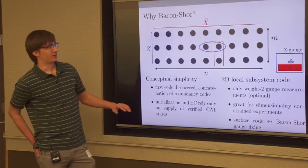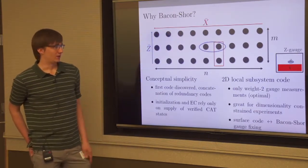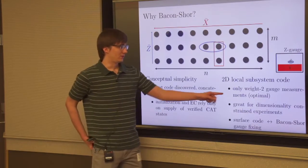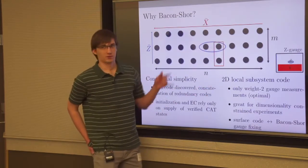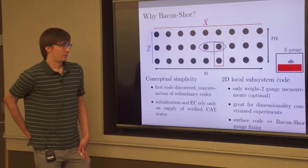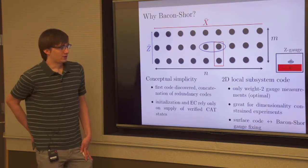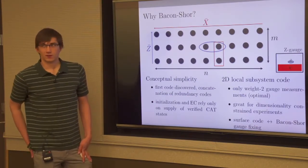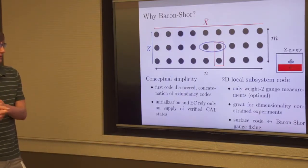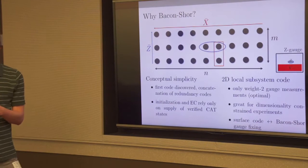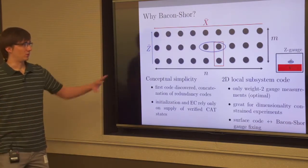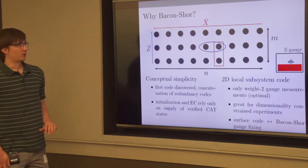You can lay these qubits out in a grid. The gauge operators are weight 2, so they're pretty easy to measure. There's also a compelling relation to the surface code: you can switch between the surface code and the Bacon-Shor code by fixing a gauge. The surface code gauge is just one choice of gauge for the Bacon-Shor code.